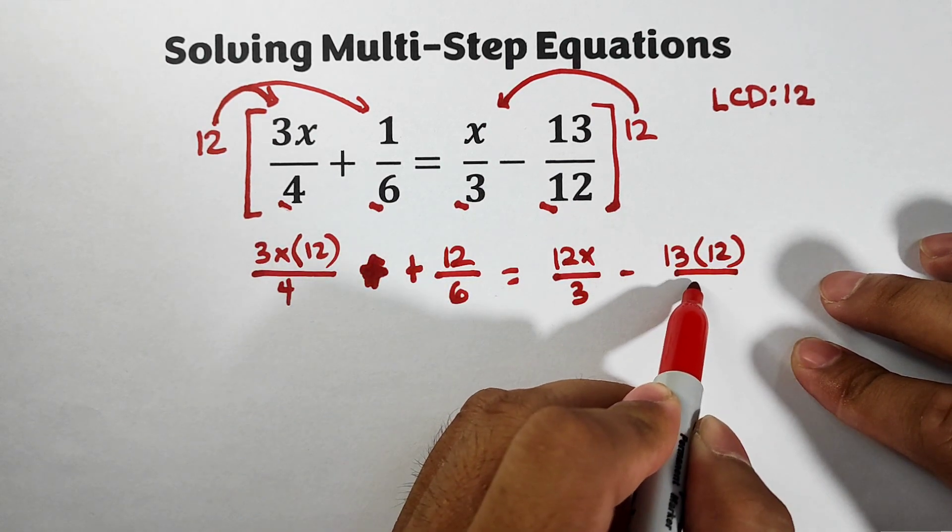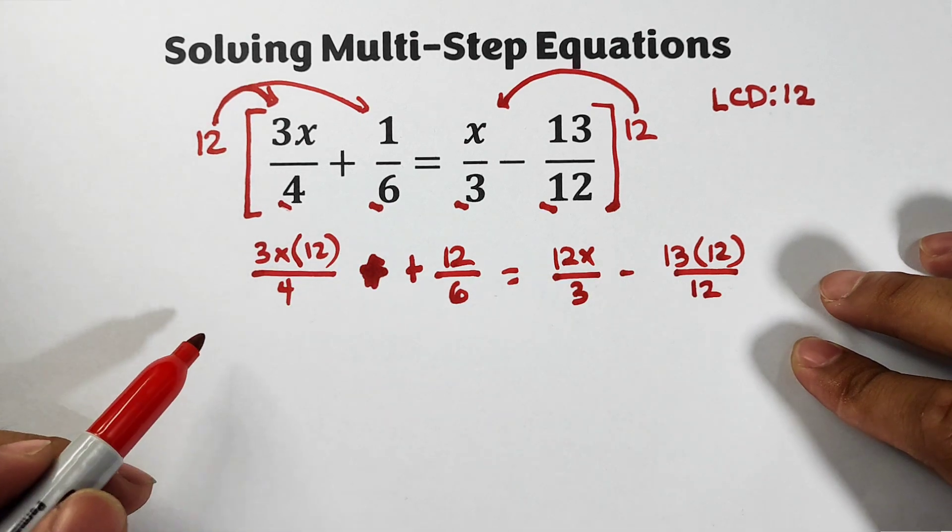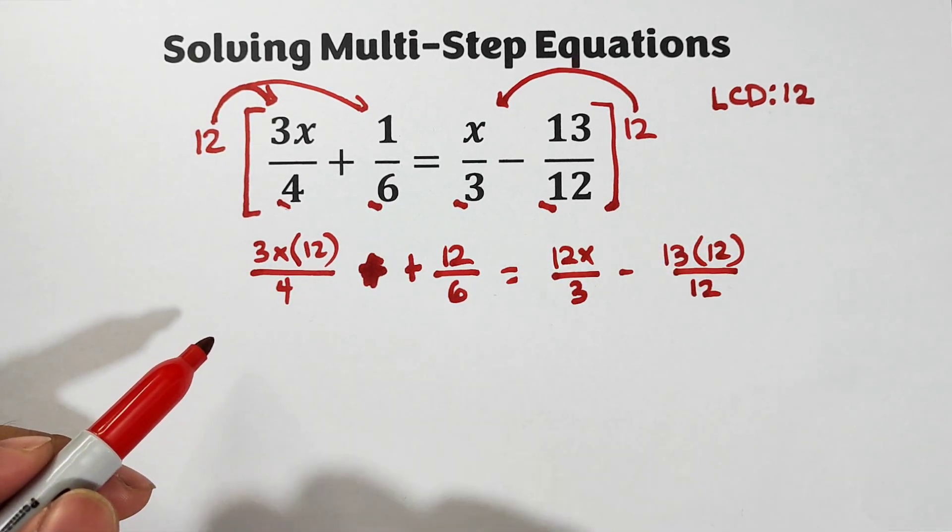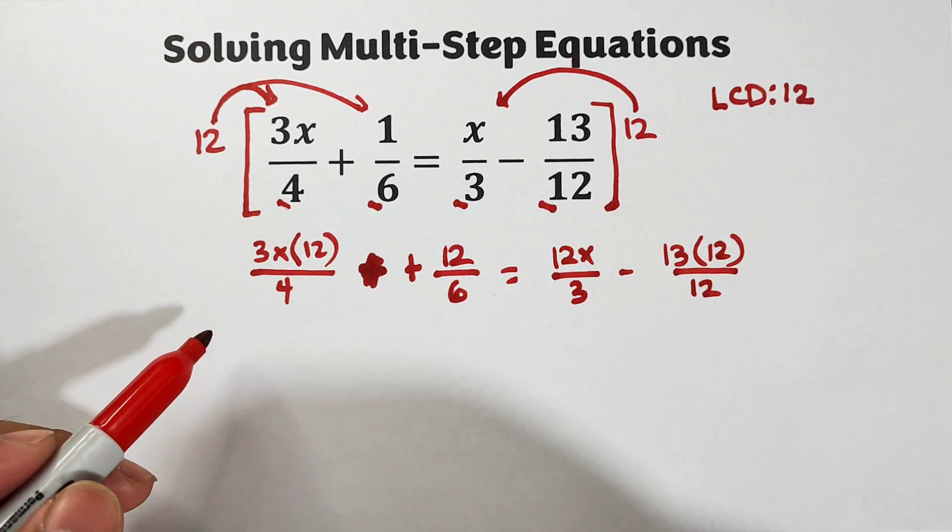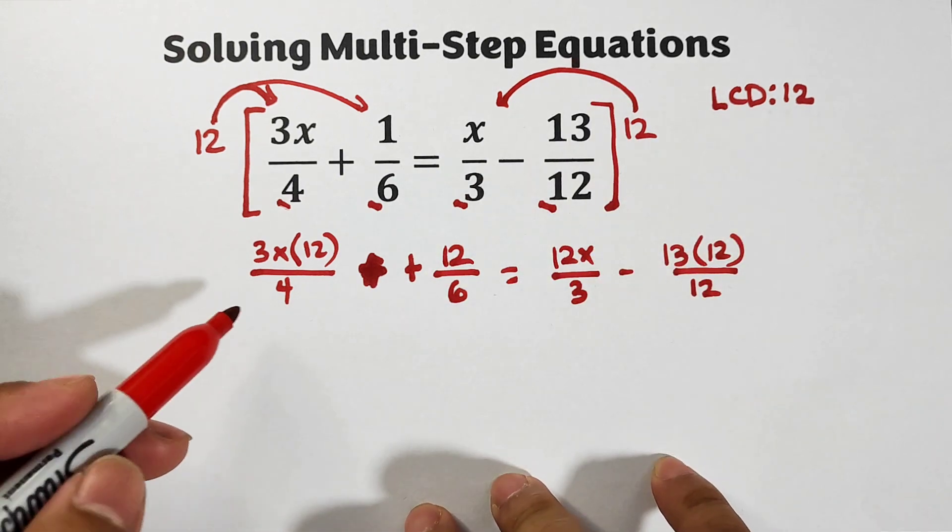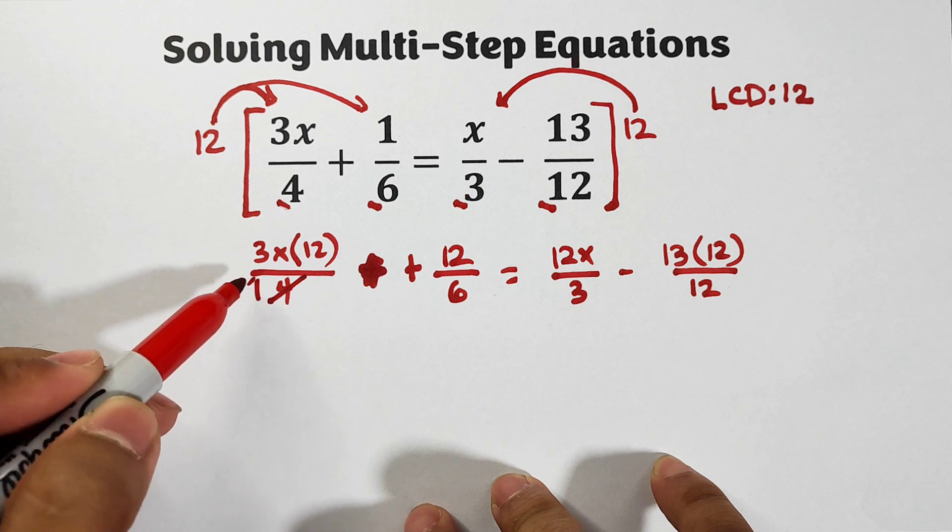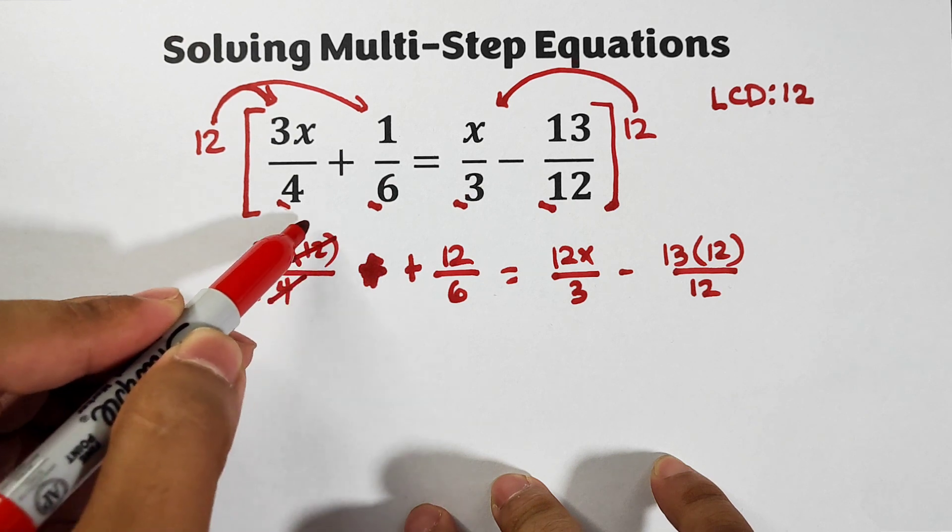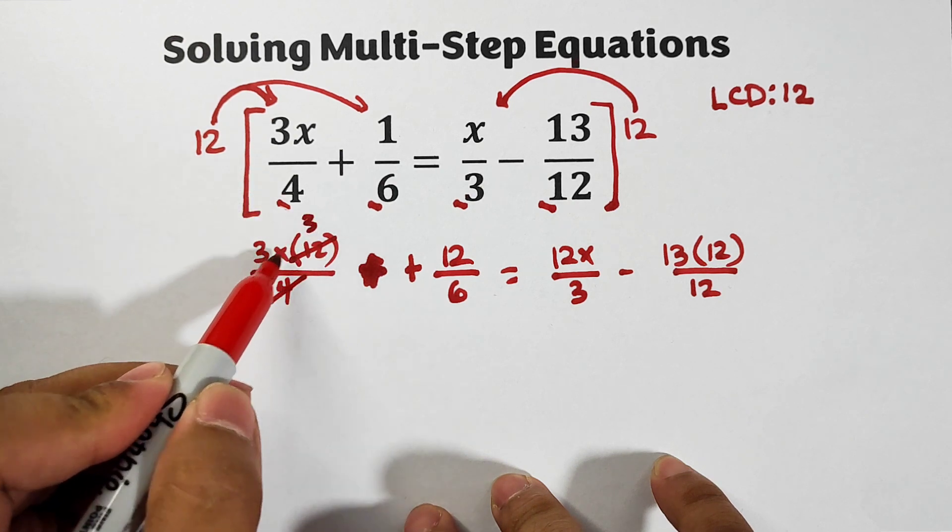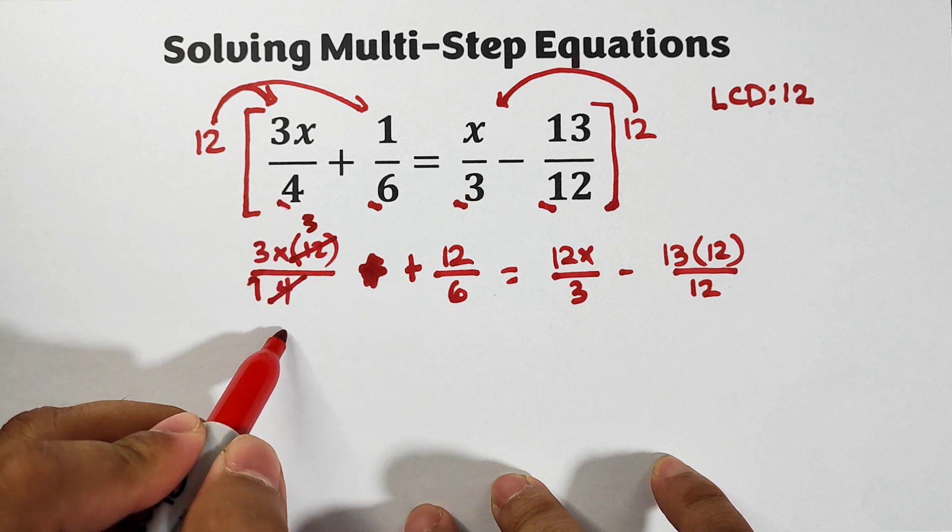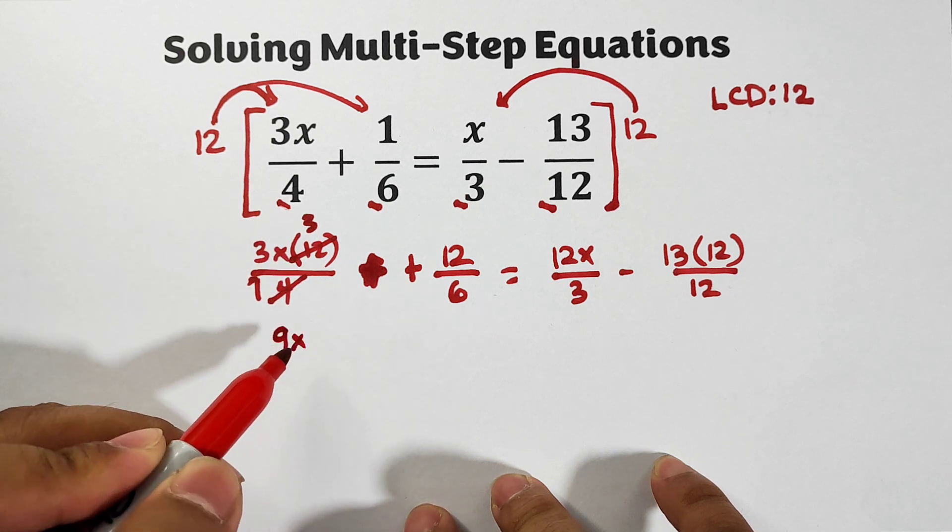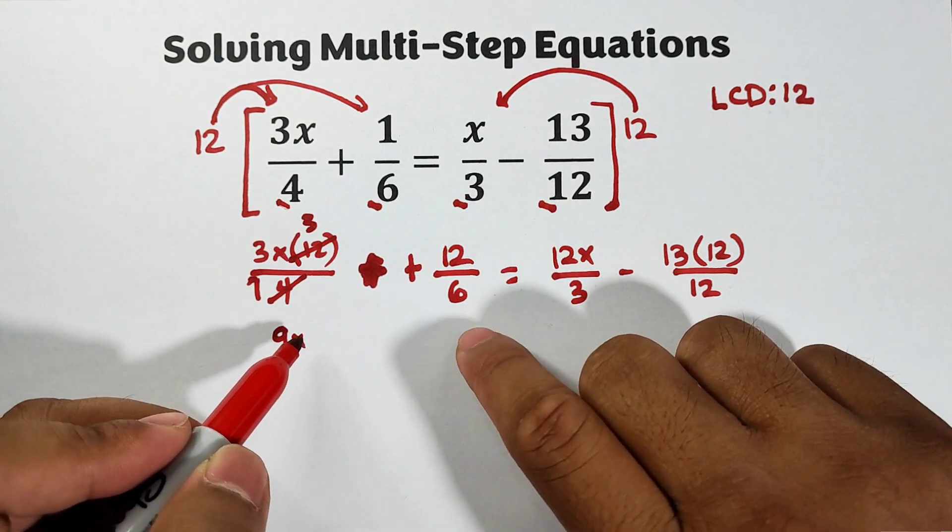In this case we can cancel out some numbers from the numerator and denominator. Here we can cancel out 12 and 4. This will become 1 and this will become 3. So what we have here is 3x times 3 which is equal to 9x.